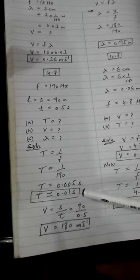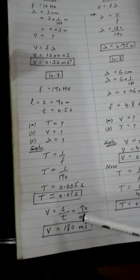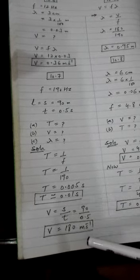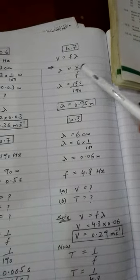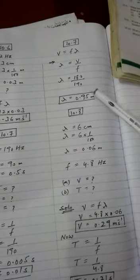Then speed is distance over time, so you will get the speed. Finally, apply V equals F lambda. You need lambda, so divide by F. Lambda is V over F. Substitute the values and get the answer. Coming to eighth numerical.